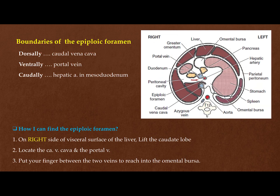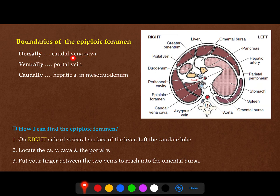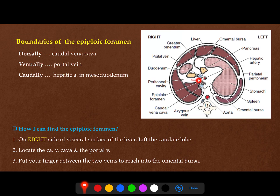What are the boundaries of the epiploic foramen? Dorsally we will find the caudal vena cava. Looking at this cross-section image with the animal in dorsal recumbency, here is thoracic vertebra 12, the aorta, the azygous vein, and the caudal vena cava. The spleen is on the left side and here is the liver. The epiploic foramen is located between the portal vein and the caudal vena cava.